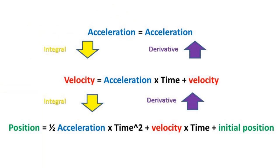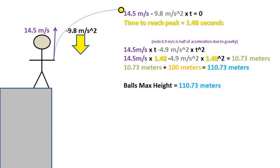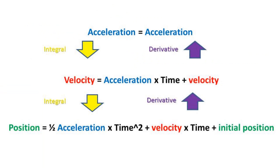Now we can plug the time into the position formula to get the height relative to the initial position. Plugging in our numbers, we get 14.5 meters a second times time minus 4.9 meters per second squared times time squared equals 10.73 meters. Adding our height of 10.73 meters from initial position to the height at initial position of 100 meters, we get 110.73 meters as our max height.